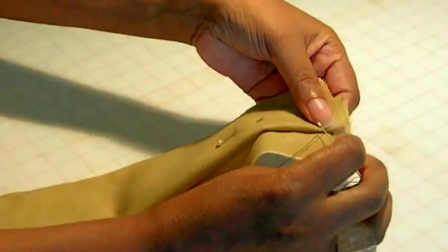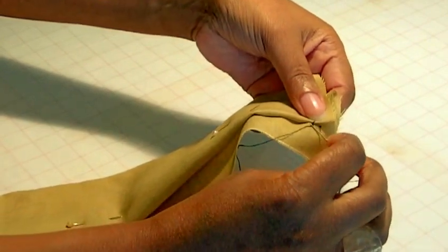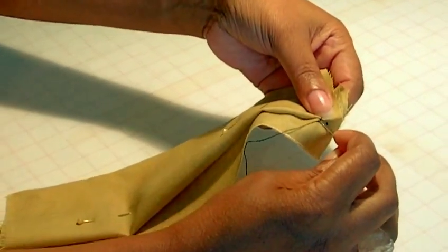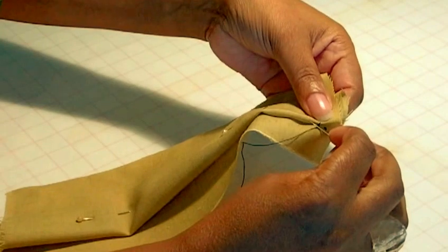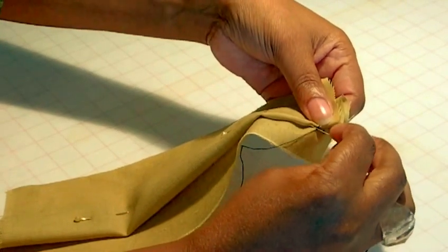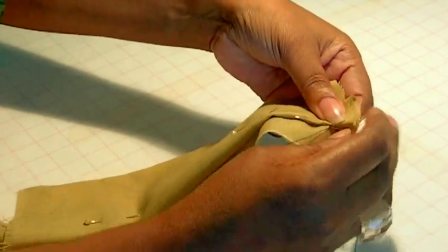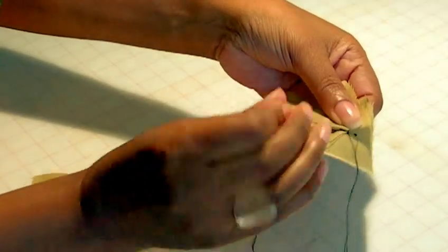You're going to pick up a couple of strands from the flat, and then you're going to go through the fold of the fabric and then out the other end.